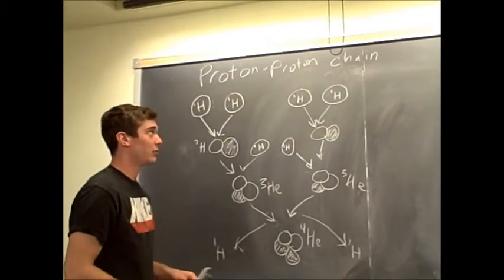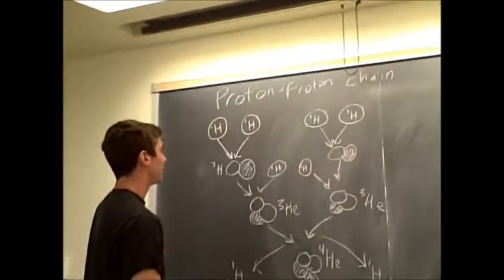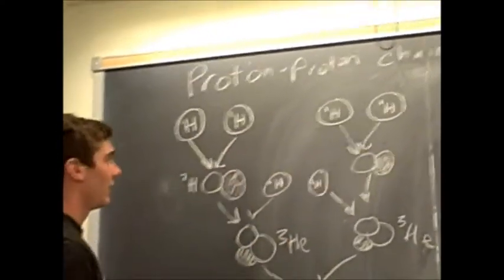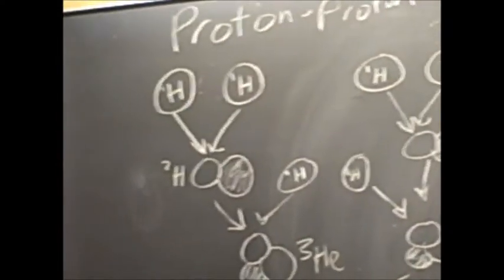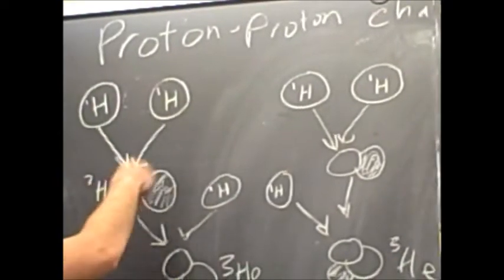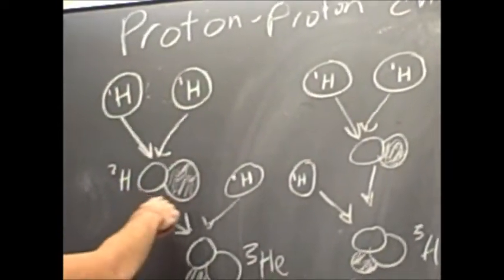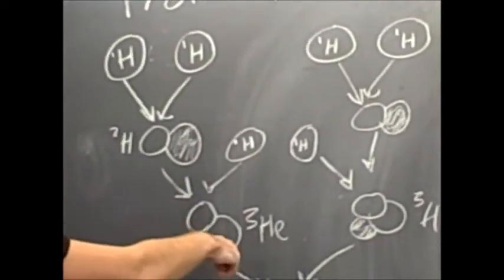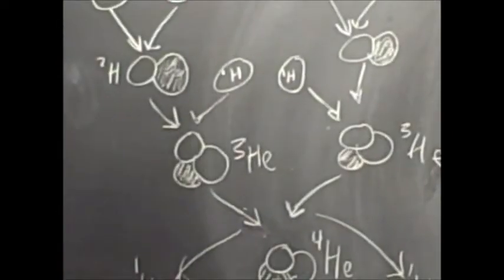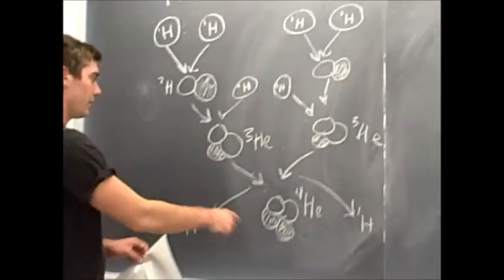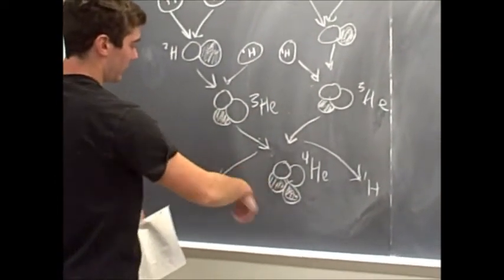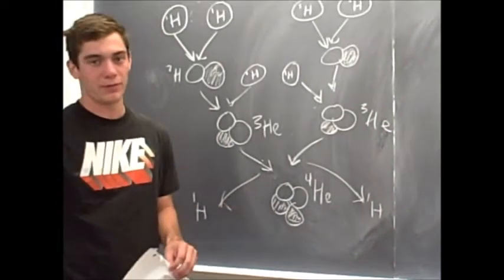So let's take a closer look at the proton-proton chain. In the proton-proton chain, four of the hydrogen atoms collide and form an atom called deuterium. And these go down and form the first of the helium atoms, which goes and collides, and then finally forms our stable four helium atom.